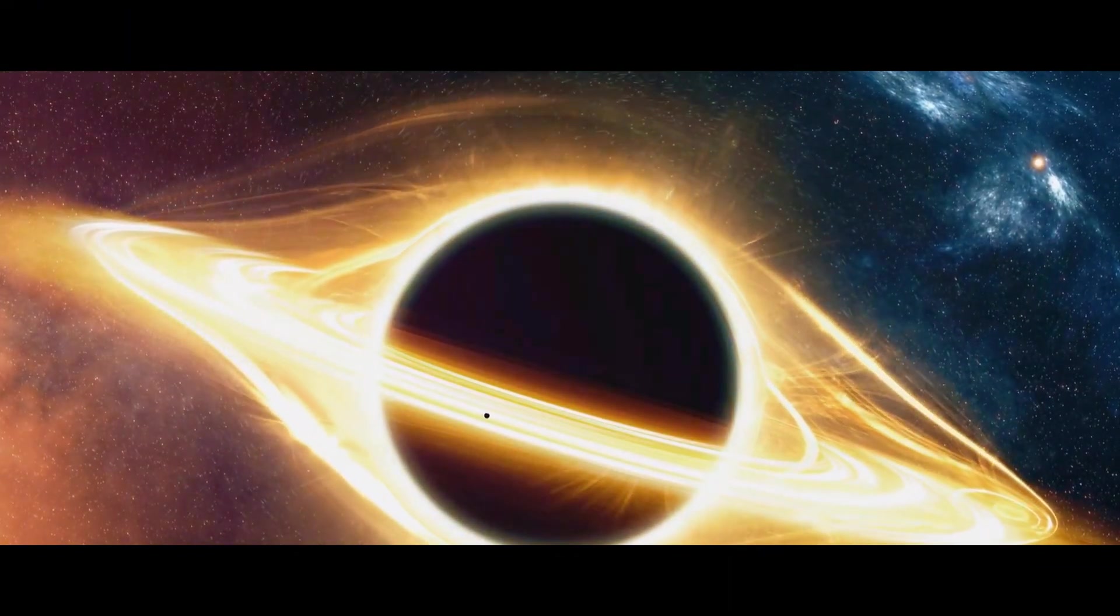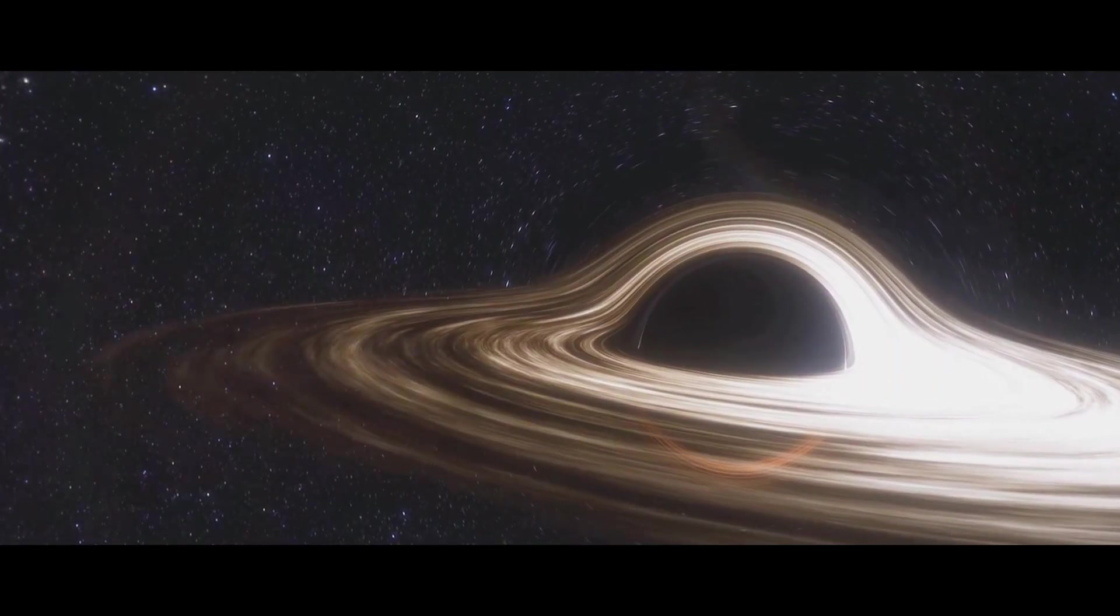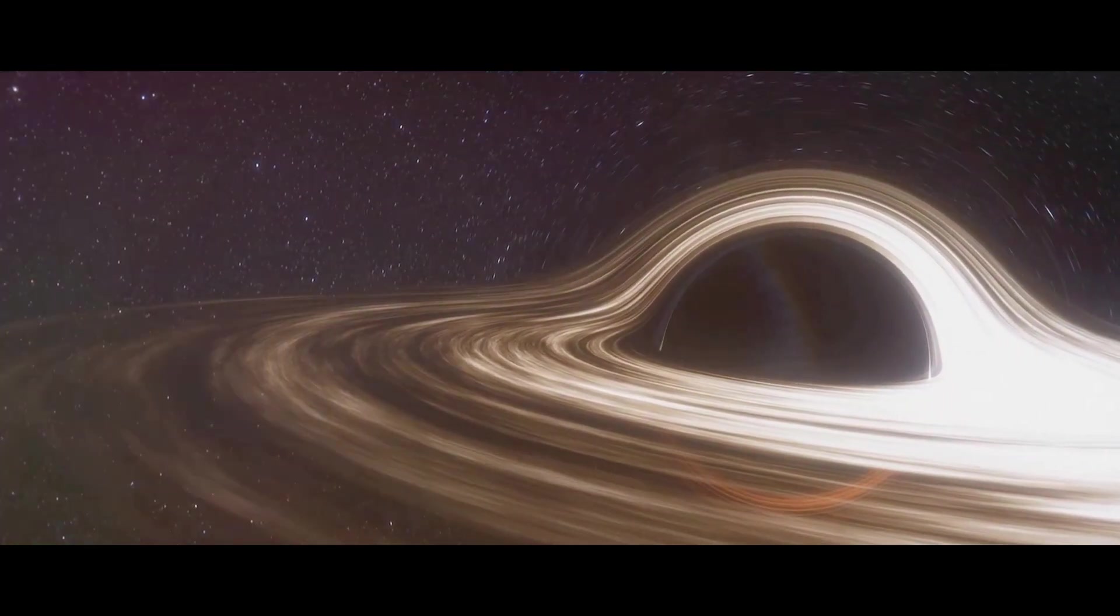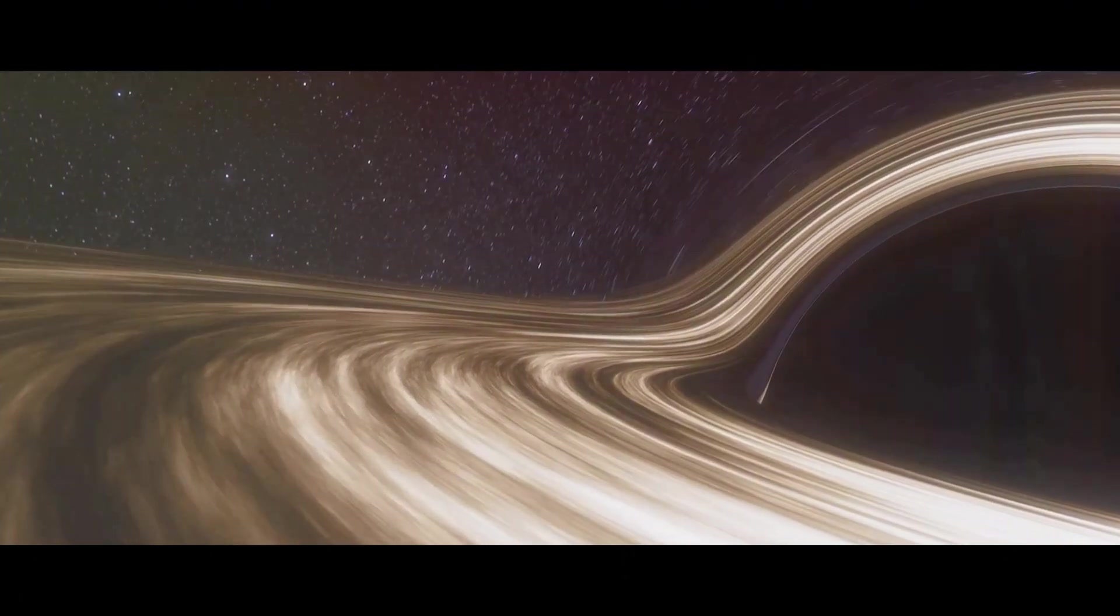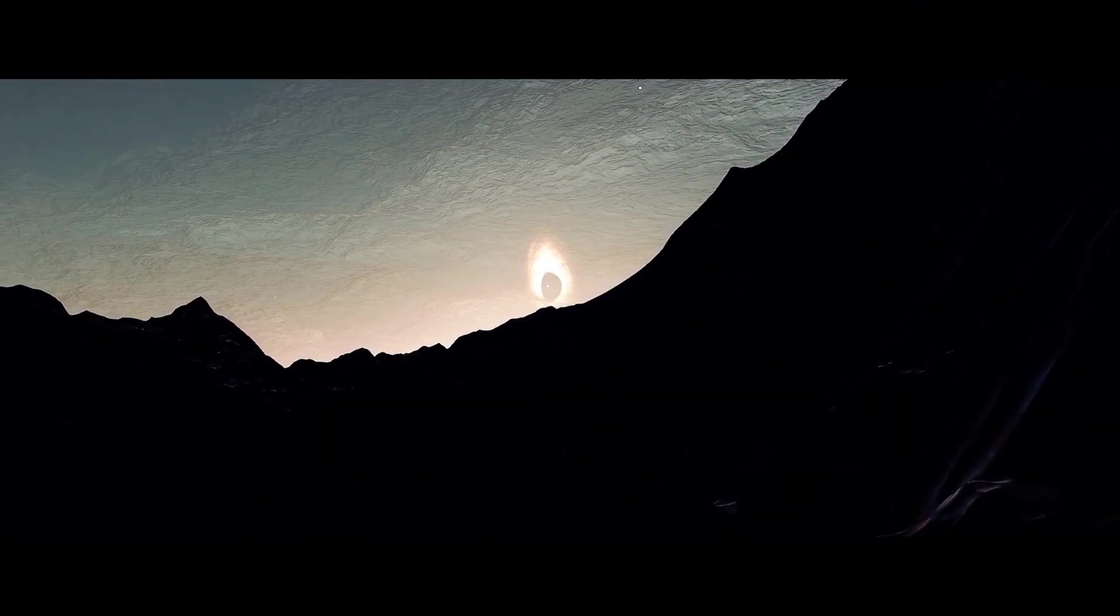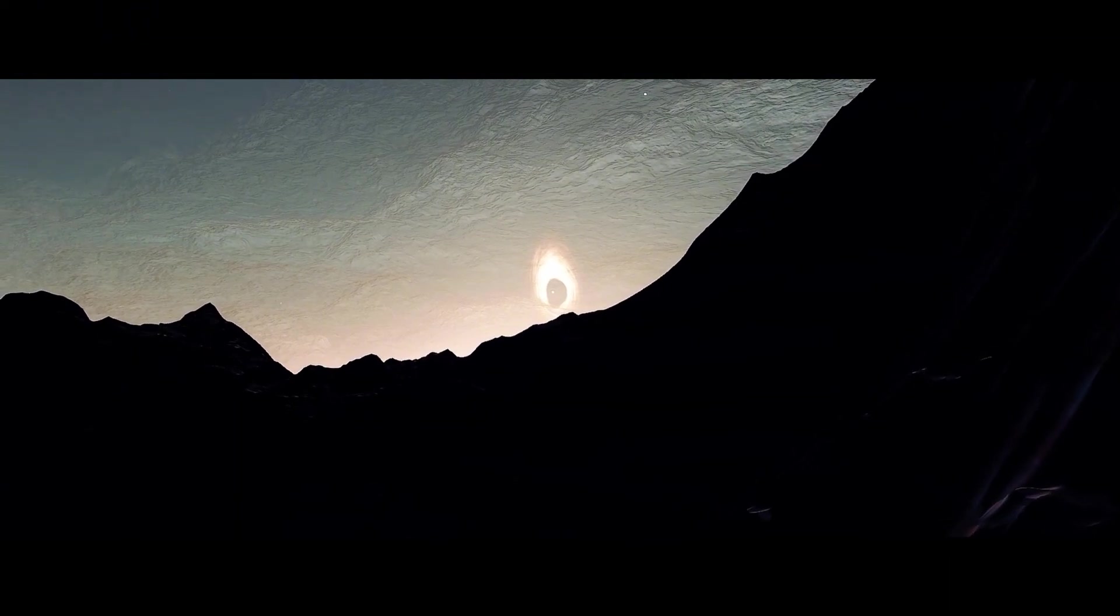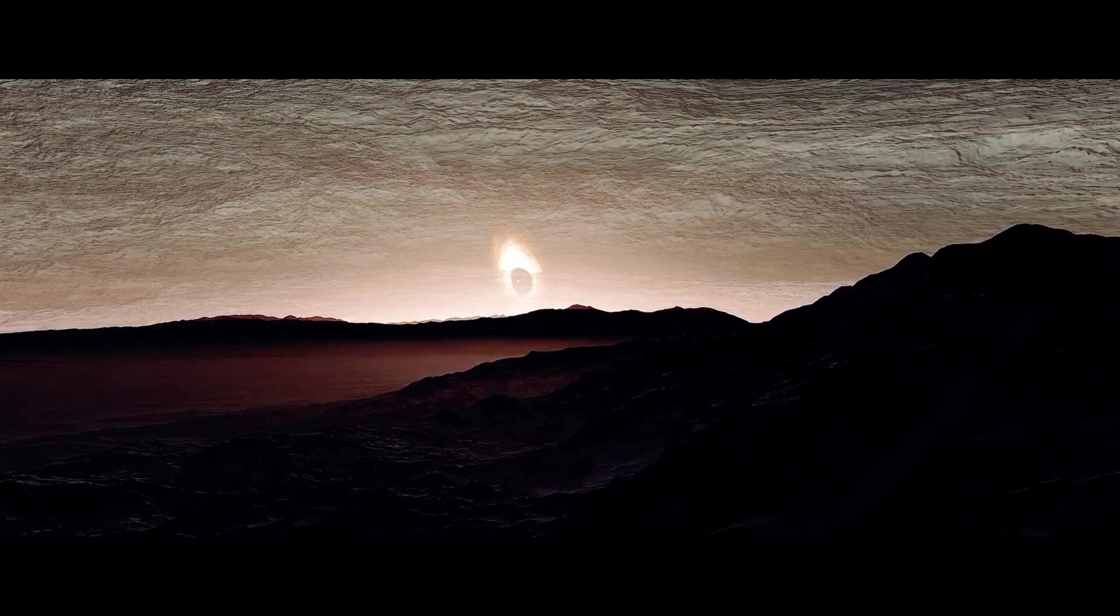But it's not all doom and gloom. These scenarios are purely theoretical and rely on a lot of ifs and buts. For instance, if our black hole was supermassive, the tidal forces wouldn't be as destructive, and we might avoid spaghettification. Plus, if we were in a stable orbit around the black hole, we could even potentially survive, at least for a while.